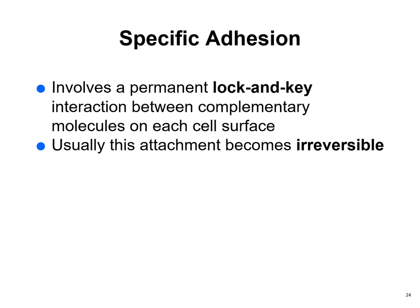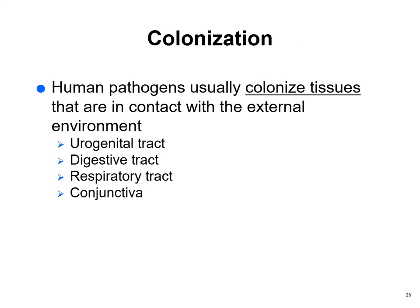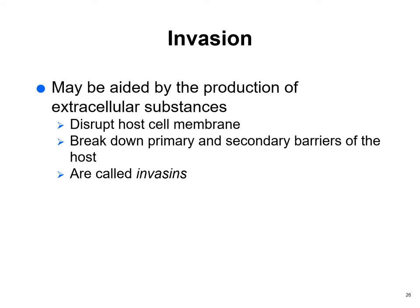Specific adhesion involves an actual receptor acting as a locking key between a molecule on the cell surface — once attached to that receptor, it won't detach. Then organisms must colonize the tissues — urinary tract, digestive, respiratory, conjunctiva — and then invade them, going into extracellular substances and disrupting the host membrane, breaking down primary and secondary barriers.